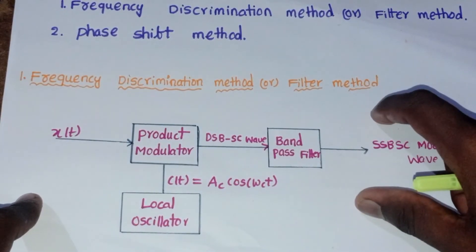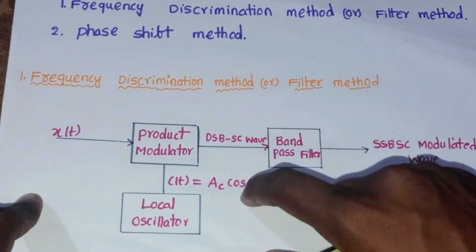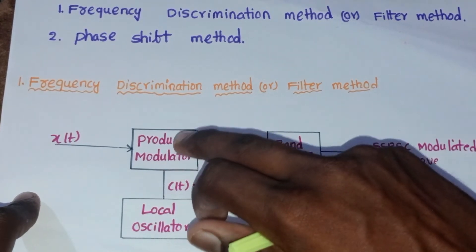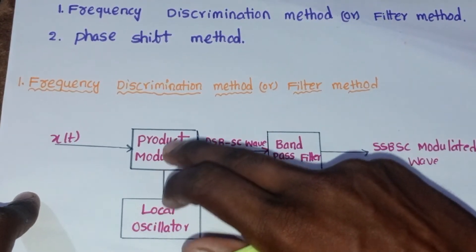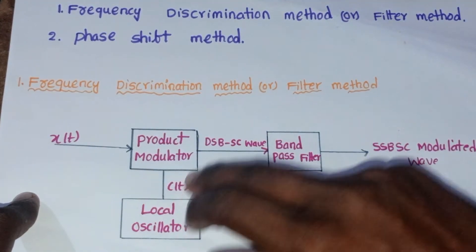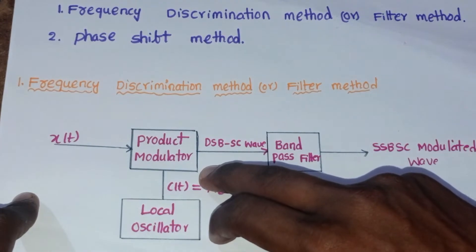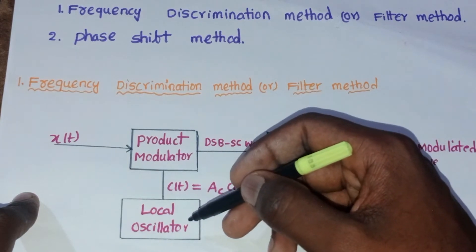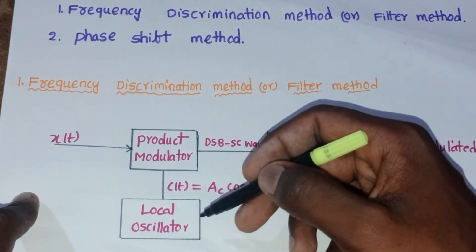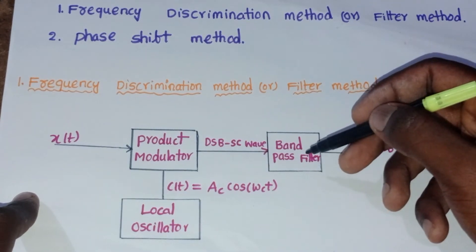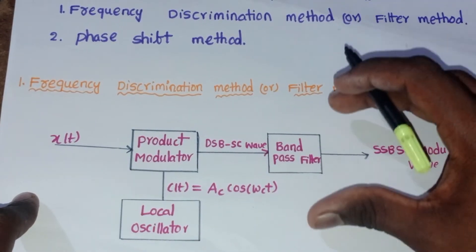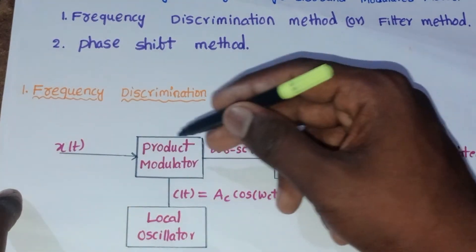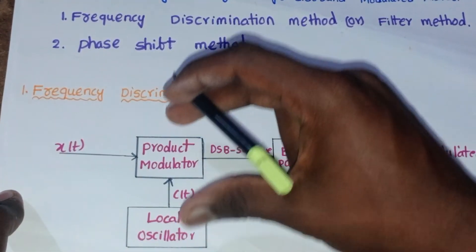In the Frequency Discrimination Method, we use three blocks. The first is the Product Modulator, which multiplies both inputs and produces their product as output — used to generate the DSB-SC wave. The second is the Local Oscillator, used to generate the carrier wave. The third is the Band Pass Filter, used to suppress one of the sidebands.